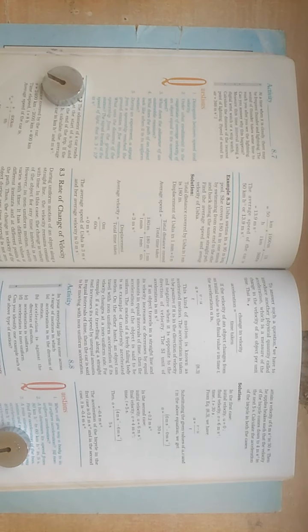So when we take positive acceleration, velocity increases in the same direction. When we take negative, that is retardation. Speed is a scalar quantity but velocity is a vector quantity. Velocity direction is also clear.